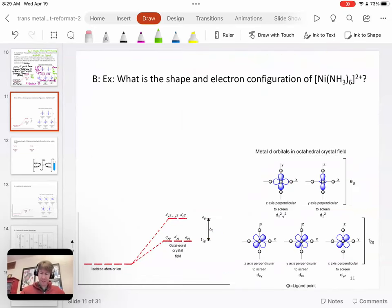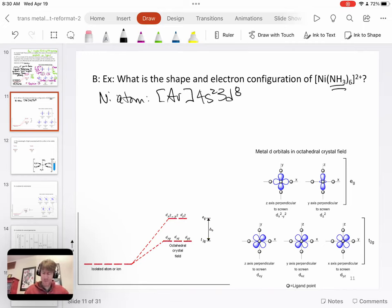All right. So here we go to the next one. It says, what is the shape and electron configuration of Ni(NH3)6²⁺? And this gets specific, and it will turn out that, again, we're telling part of the story here. But now that we have nickel, we know that nickel atom has argon and it has 4S2, 3D8. Ammonia is a neutral molecule. So this 2 plus charge has to belong to the nickel.